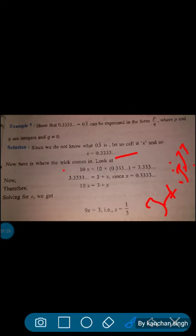Now see, this 0.333 - we have considered this as x. So 10x equals how much? 3 plus x. Now after solving this, 10x minus x equals 3. So this is 9x equals 3, that is, x equals 1 by 3.